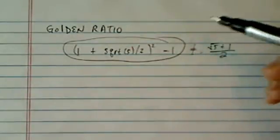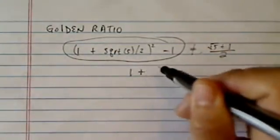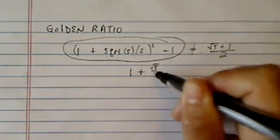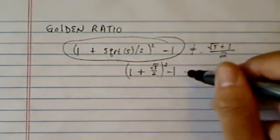Let's see a couple of things, actually. I'm excited, as you can tell. 1 plus radical 5 over 2, this whole thing squared, minus 1. Let's see what this one actually equals to.